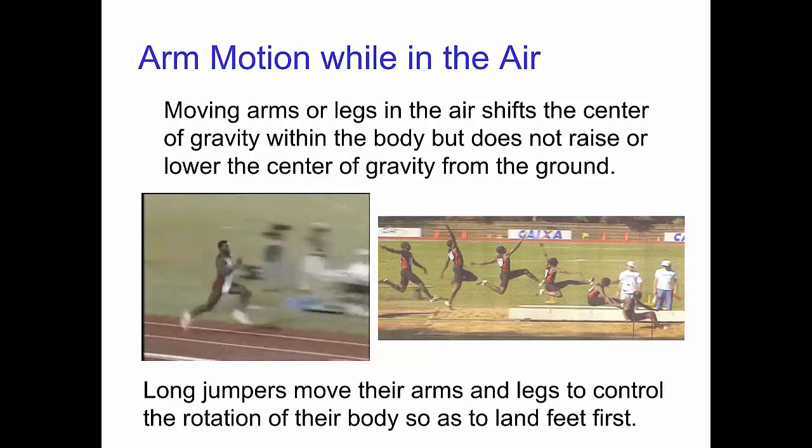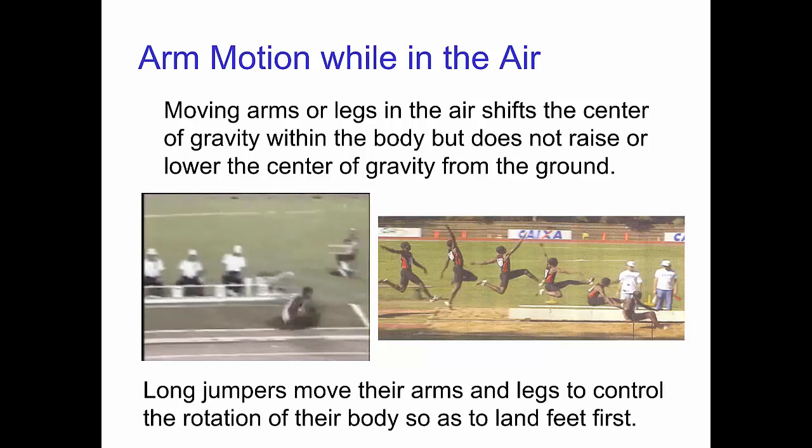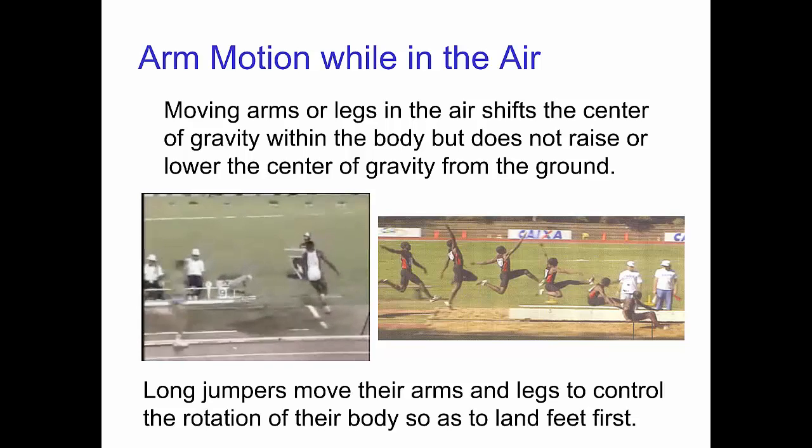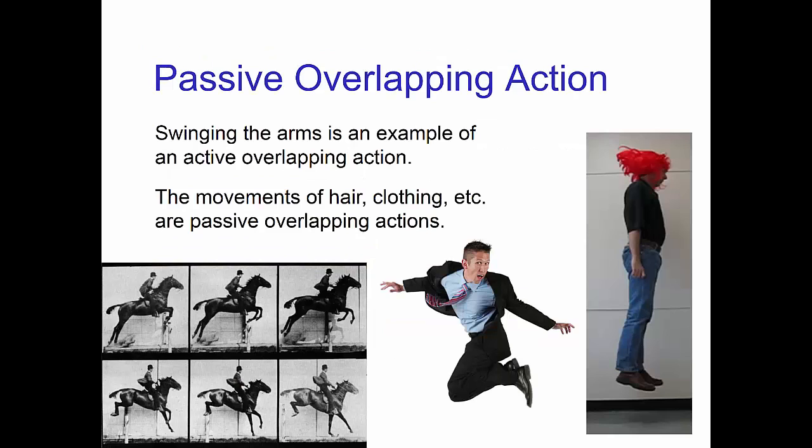There's another video that discusses this topic in more depth by analyzing mid-air somersaults and twists. Swinging the arms is an example of an active overlapping action.